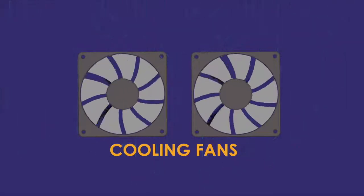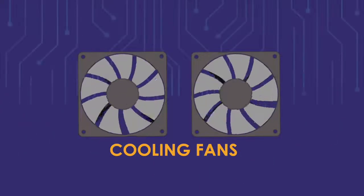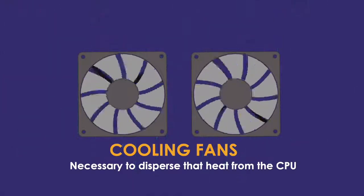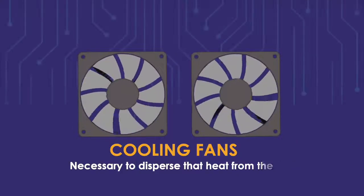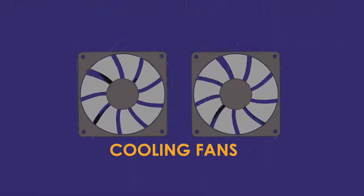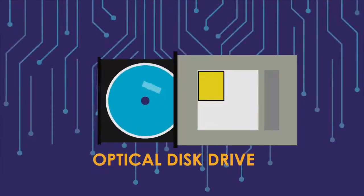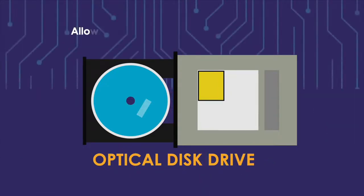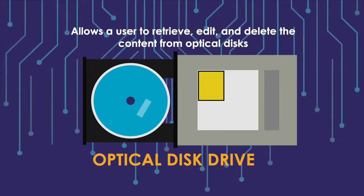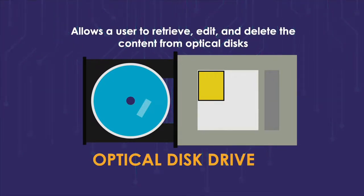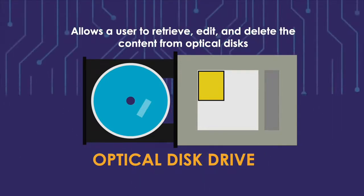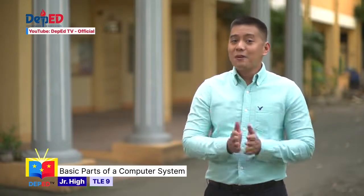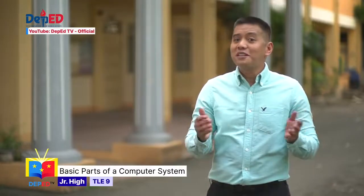A cooling fan is a hardware device that keeps the overall temperature of a computer by circulating air to or from the computer. The CPU handles millions of calculations every second, and this is the reason why a cooling fan is necessary to disperse that heat. Maintaining your computer's cooling system can increase their lives and reduce the chance of damage to the other parts inside your system unit. And lastly, we have the optical disk drive. A type of optical drive reads and writes data from an optical disk through laser beam technology. This type of drive allows a user to retrieve, edit, and delete the content from the optical disk such as a compact disk, digital versatile disk or DVD, and Blu-ray disk. Although optical disk drives are still in existence today, they have become less used since software, movies, and music can often be downloaded from the internet.